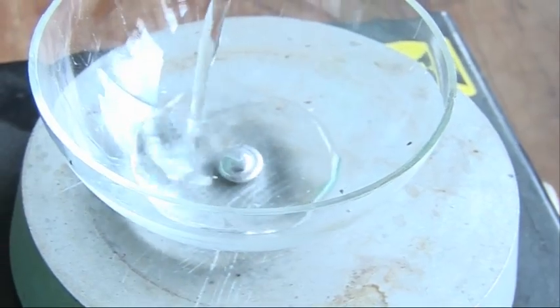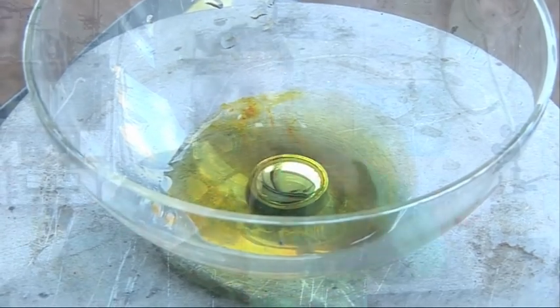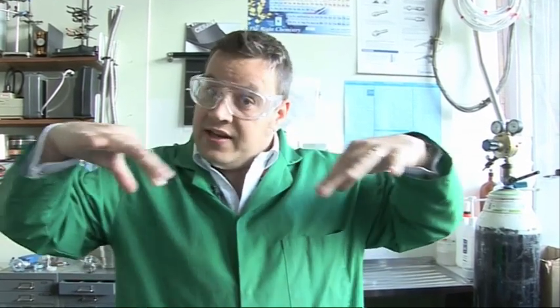What we then do is we dribble a small amount of dichromate solution in, which removes the sulfate from the surface and allows the gallium to go flat. And if we add the required amounts of dichromate to the amount of acid, then we can get the ball to flatten and come back up, flatten and come back up, so it looks like a beating heart.